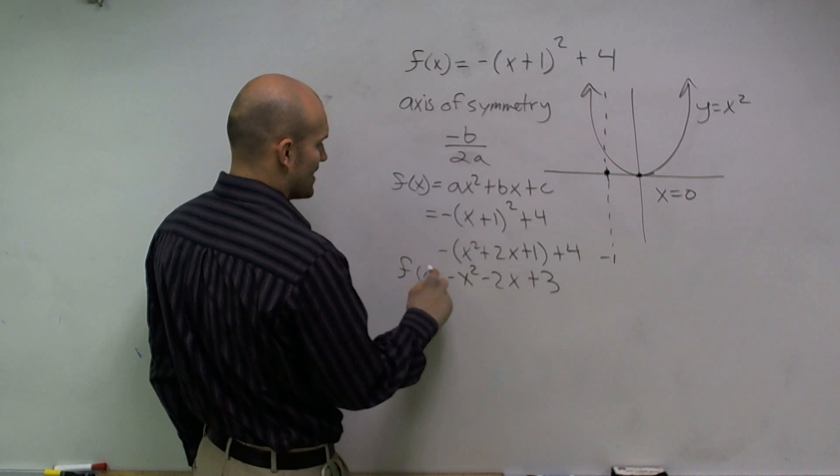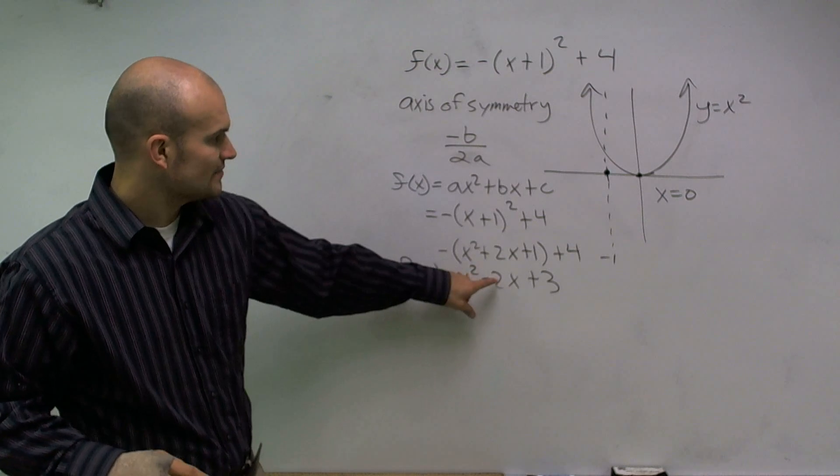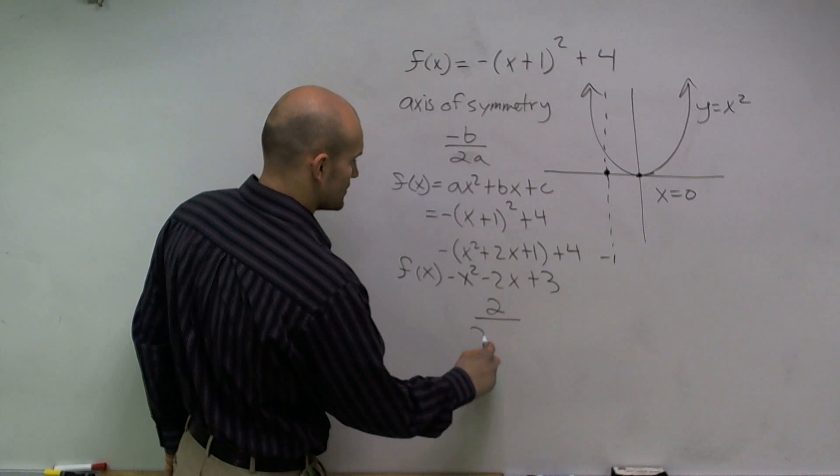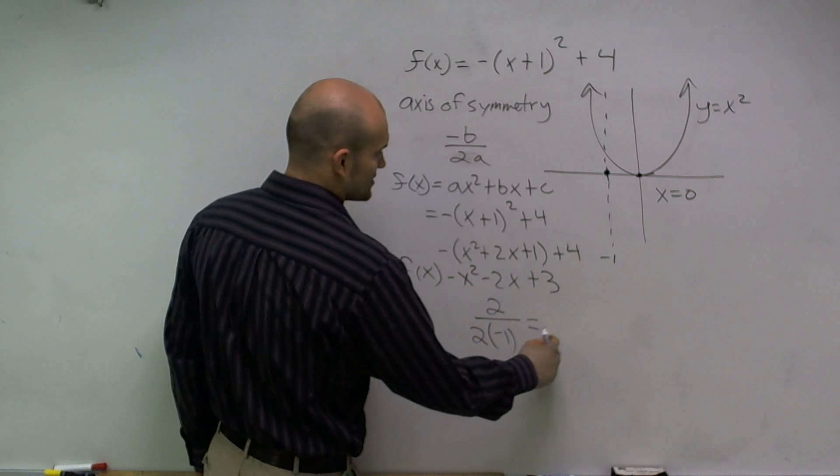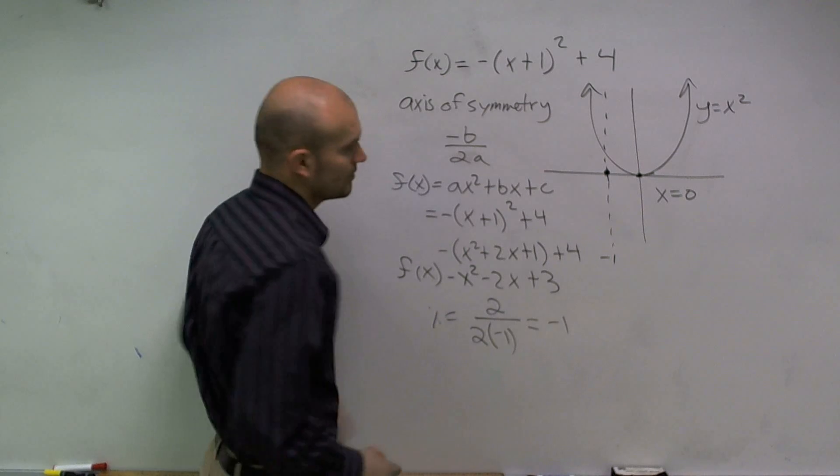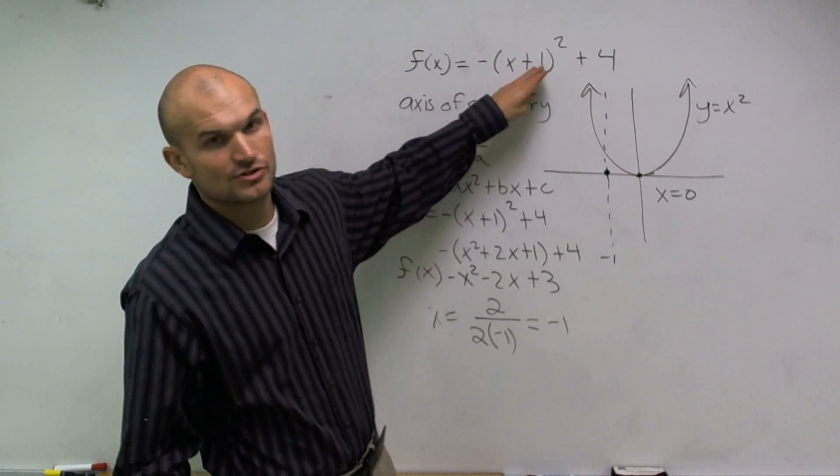All right, so therefore, if I have that, now if I take a look at this and say, well, the opposite of b, which would be a positive 2, divided by 2 times a, which is negative 1. And that answer gives me x equals negative 1, which again is the same answer that I very quickly and easily found by just using my transformations.